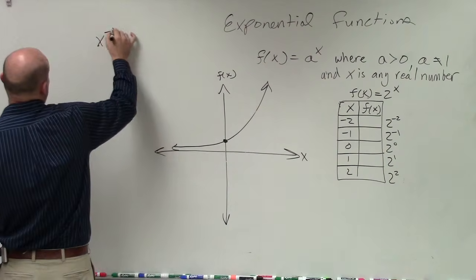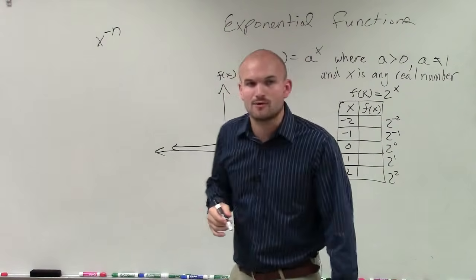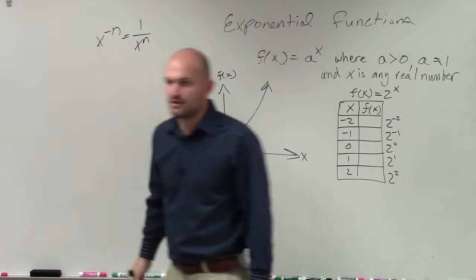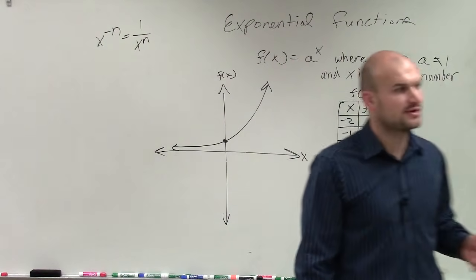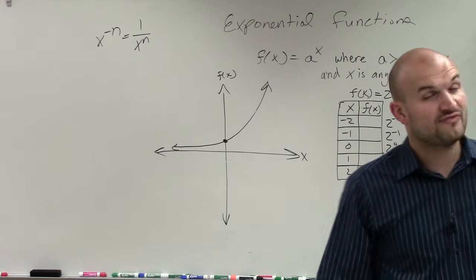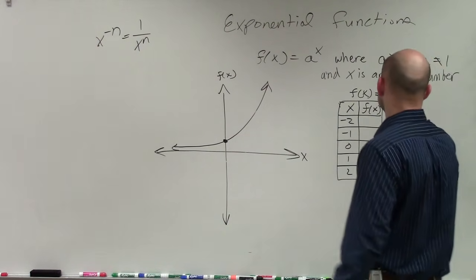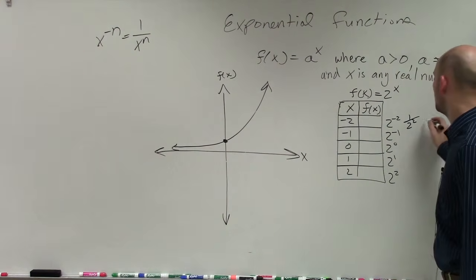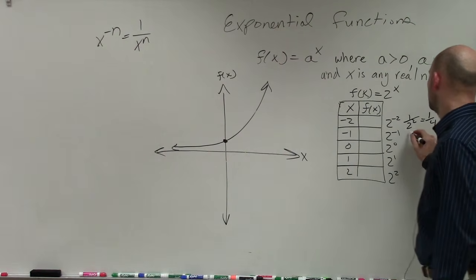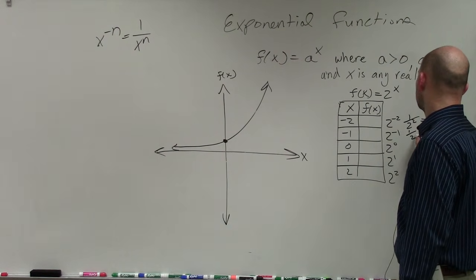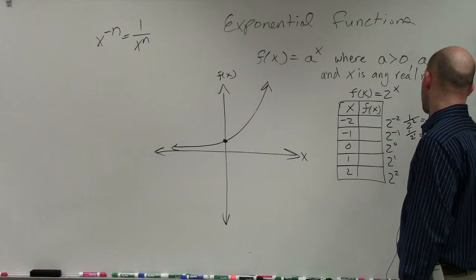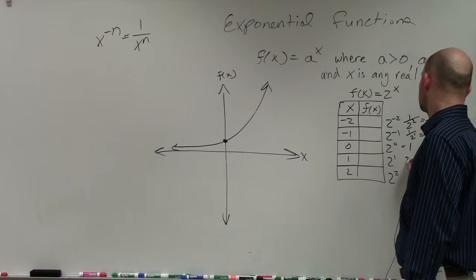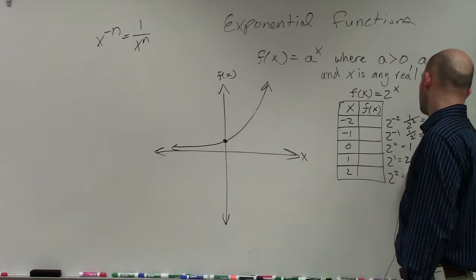And our properties of exponents state that if you have x raised to a negative power, that is equivalent to 1 over x to that power. That's the properties of exponents that we went back and reviewed. So it's very important that you guys understand that, because this is 1 over 2 squared, which is equal to 1/4. This is 1 over 2 to the first power, which is 1/2. 2^0 is just going to equal 1, 2, and 4.